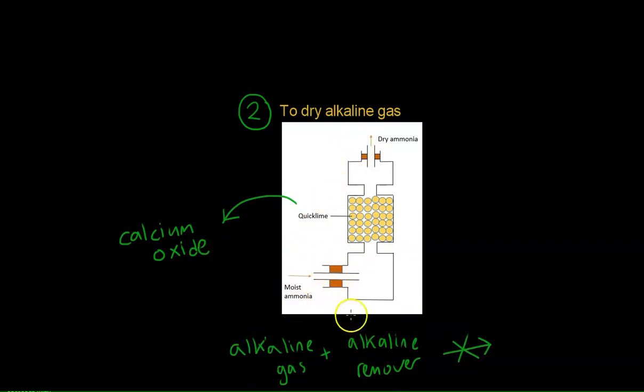In this setup we have ammonia, which is NH3, being passed into this chamber here and going up. Its moisture is being removed quickly by the quicklime. When it emerges out from this portion here, it will be dried. And so that's how you remove water vapour from alkaline gas by using an alkaline removal, which in this case is quicklime.